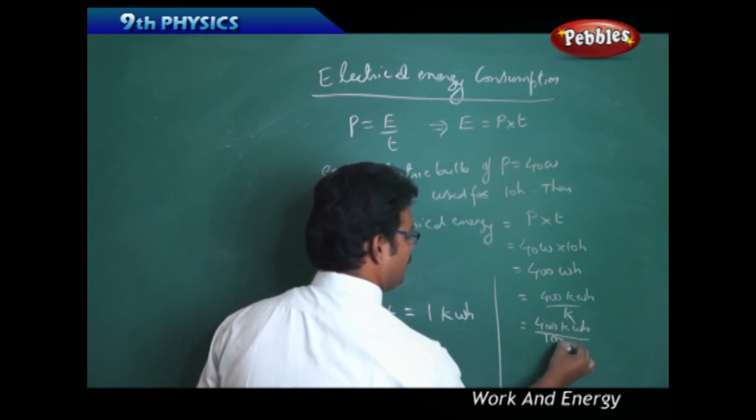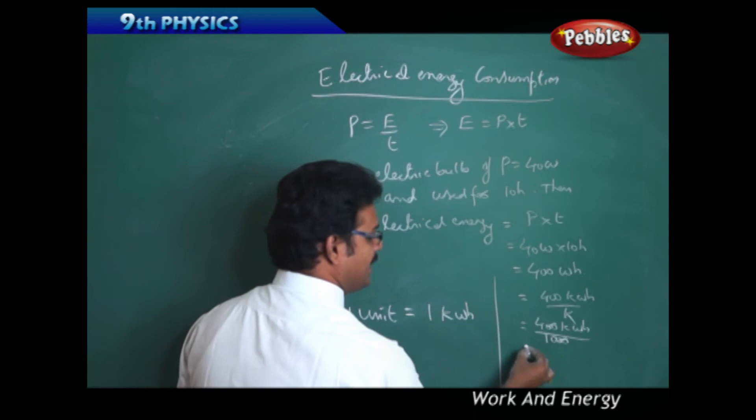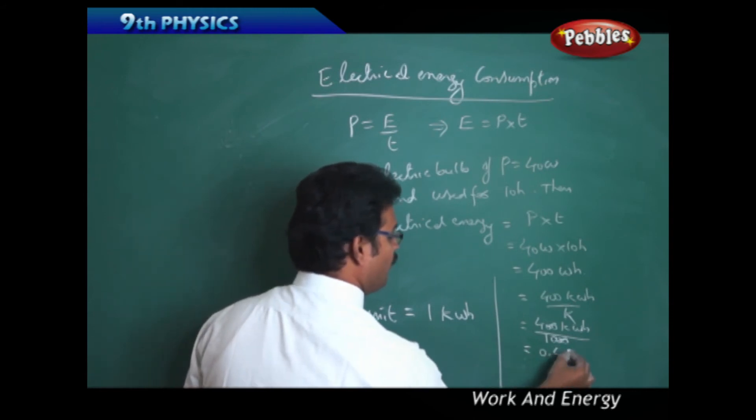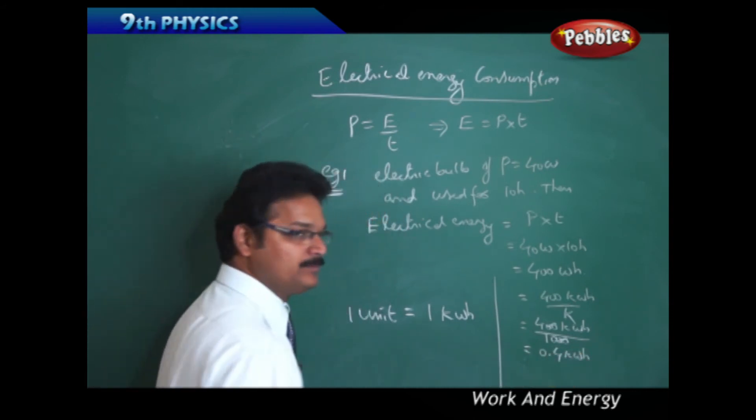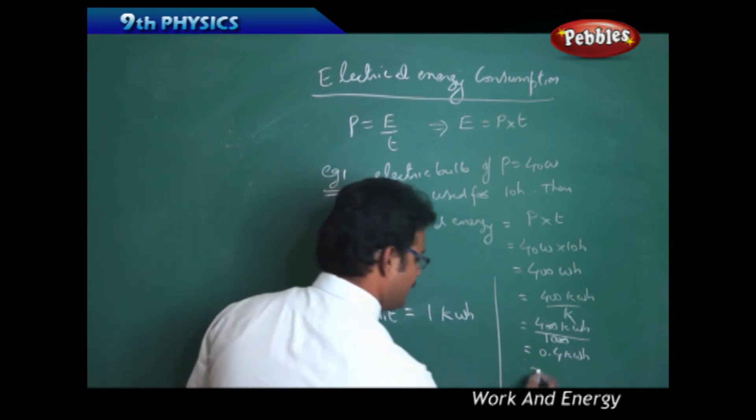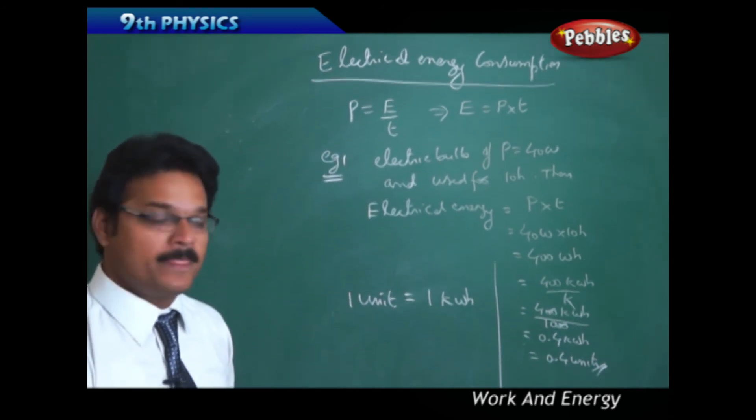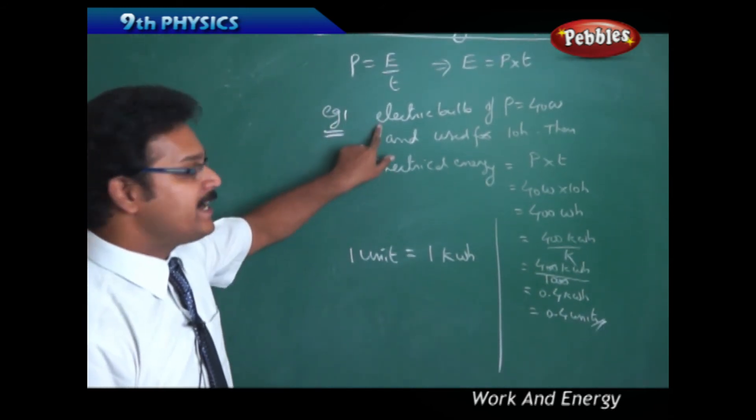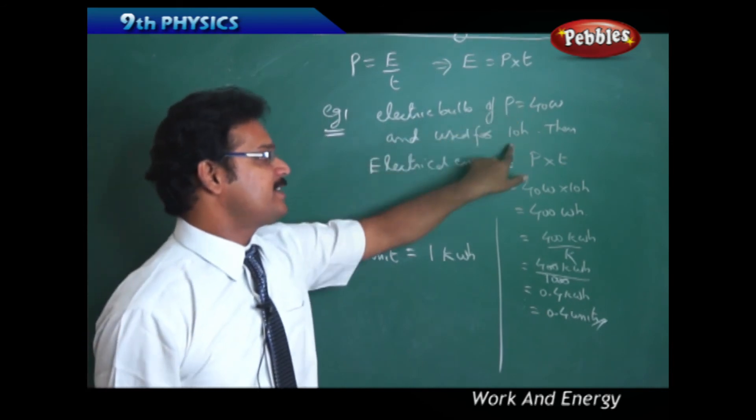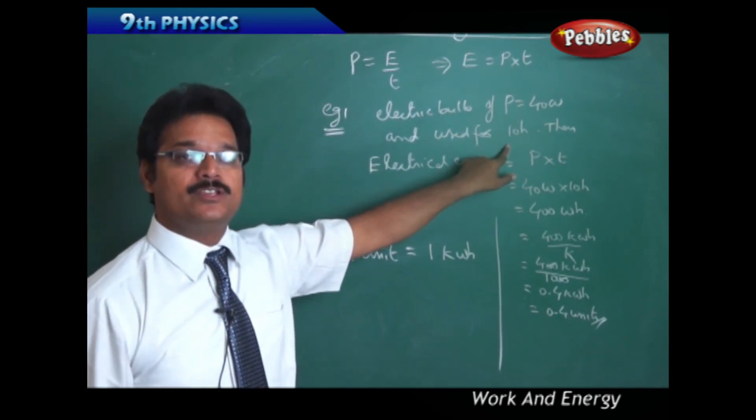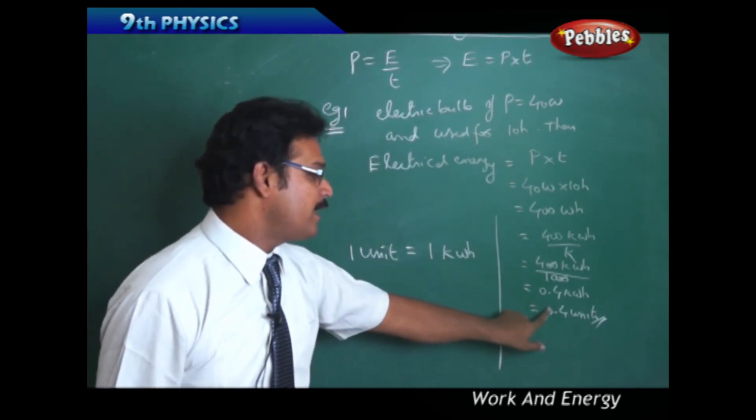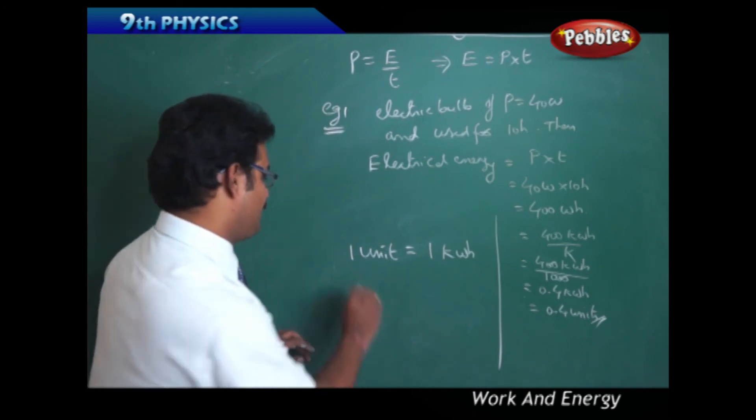So 400 kWh by 1000, so two zeros cancel, 0.4 kWh or I can say 0.4 units. See, you got it. So if you use electric bulb of this much power for 10 hours, the amount of units you have consumed is 0.4. And remember this conversion.